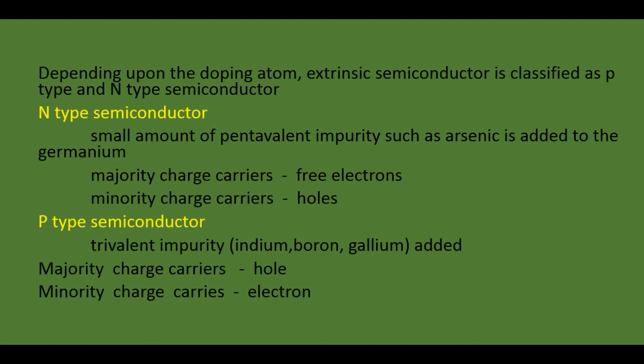In P-type semiconductor, trivalent impurity is added. Trivalent means the outermost shell has three electrons. This trivalent atom is added to the pure semiconductor, making it a P-type semiconductor. Examples of trivalent impurities are indium, boron, and gallium. Here, majority charge carriers are holes and minority charge carriers are electrons.